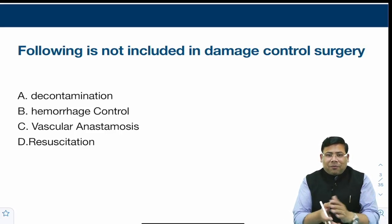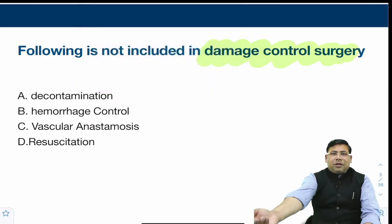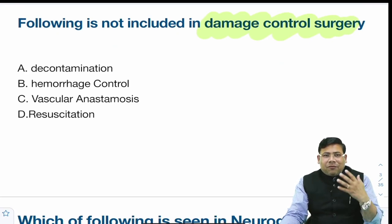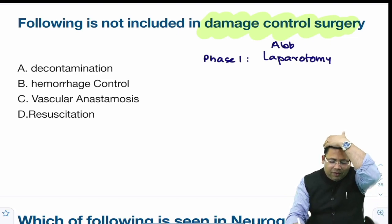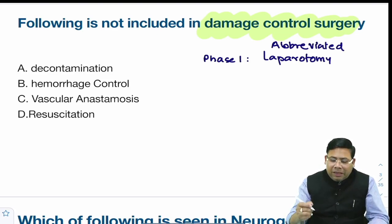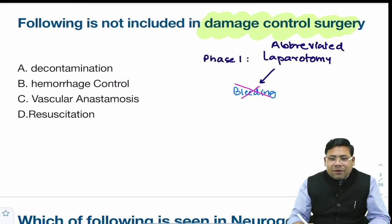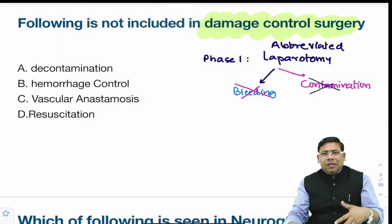General surgery was very heavy. There was a question on damage control surgery. Damage control surgery is an abbreviated form of surgery where we control the damage — we don't correct it. We control the damage first, then send the patient for resuscitation. Phase one of damage control surgery is the laparotomy — an abbreviated laparotomy. The two things done are: first, control any ongoing bleeding; second, control contamination.